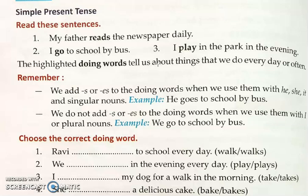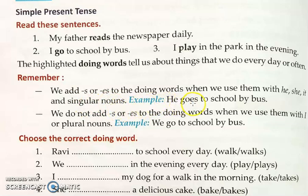Often means regularly or repeatedly. Now remember: we add S or ES to the doing words when we use them with he, she, it, and singular nouns. For example: 'He goes to school by bus.' Whenever we use it with he, she, or it — that is singular nouns — we add S or ES.